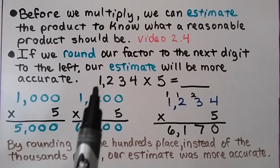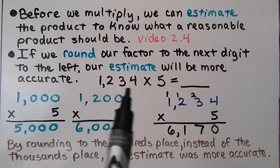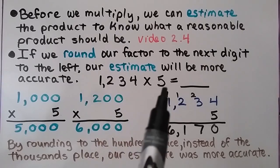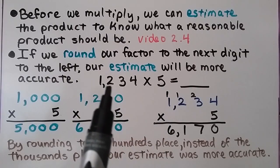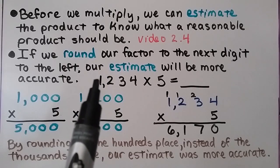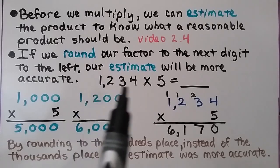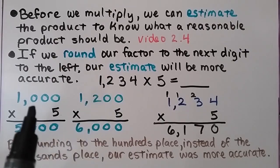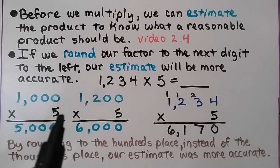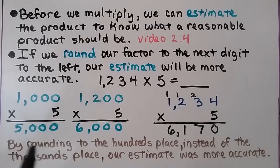For example, here we have 1,234 times 5. This 2 tells the 1 to stay the same, and they all become zeros, so it rounds to 1,000. We do 5 times 1,000, which is 5,000.